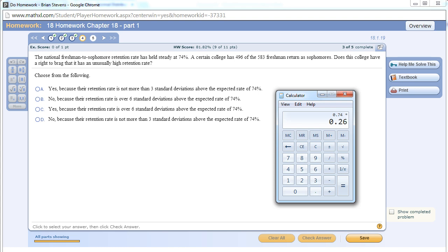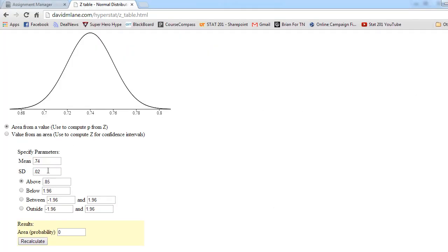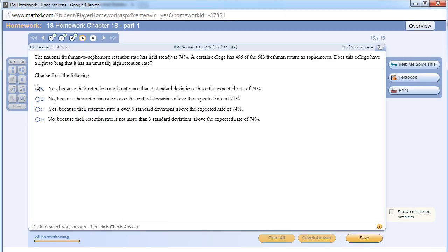P times q over n, and then we square root this. I can copy paste it into here, and if you take a look, the possibility above 85% is zero. This is a very, very high rate. If you look at how many standard deviations it is above: one, two, three, four, five, maybe six, seven standard deviations. It's really far above. So yes, because their retention rate is more than six standard deviations, definitely room to brag. They are way away from everyone else.